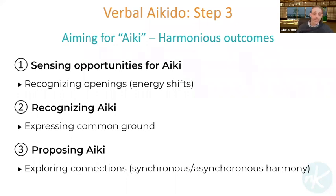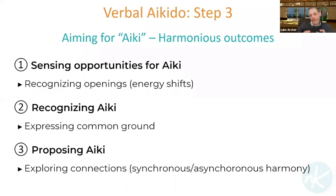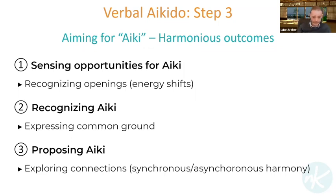We talk about synchronous and asynchronous styles of harmony. Synchronous harmony is more co-creative — you see the other person as a compadre, working together with them towards something. An ike you might propose could be something like: 'How about we sit down and see how we can work this out?' — really simple. That's called a 'bright future ike.' It's more synchronous — both people are on a similar sort of level.